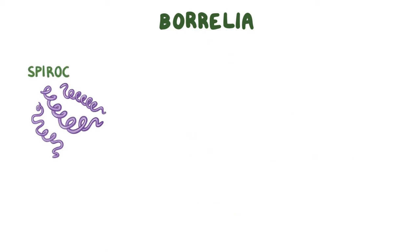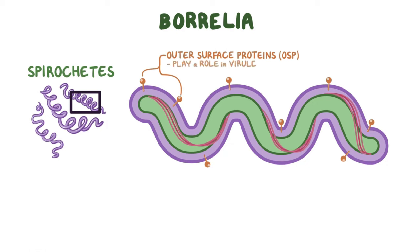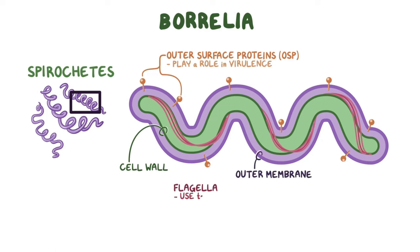Borrelia are spirochetes, which means spiral-shaped bacteria. They have outer surface proteins, abbreviated as OSP, which play a role in virulence, and sets of flagella that run between the cell wall and outer membrane, which they use to spin or twist to move in a wave-like motion.